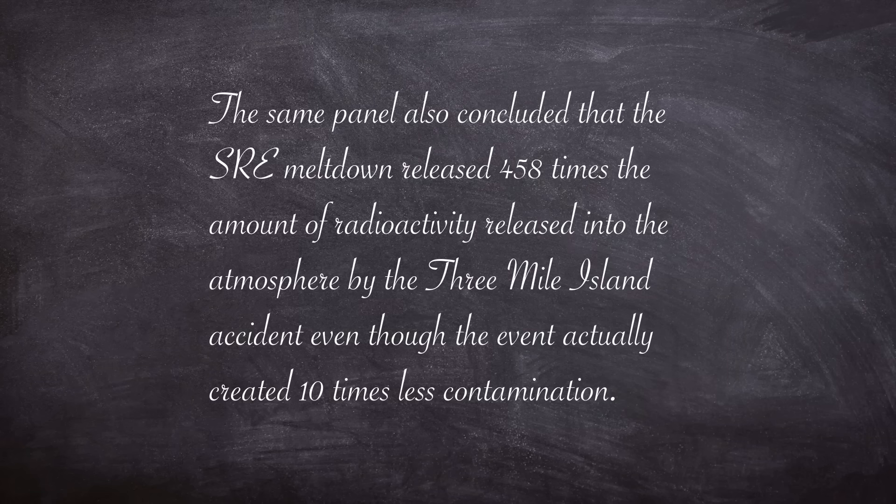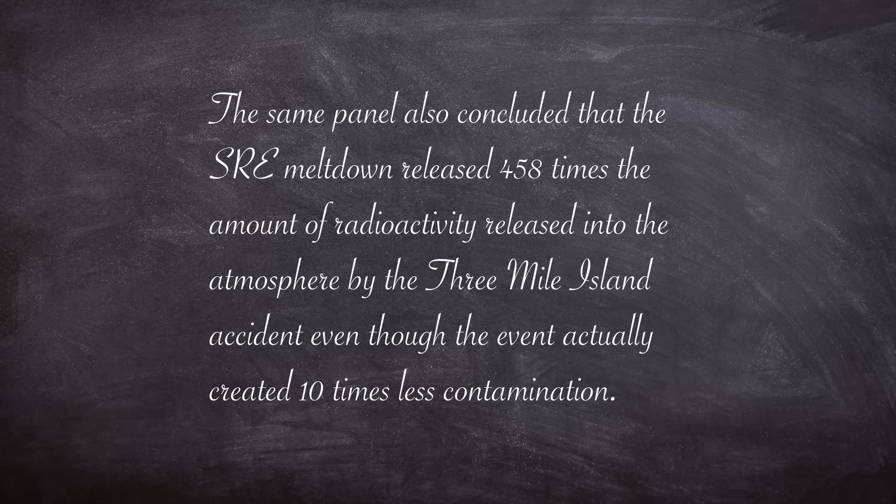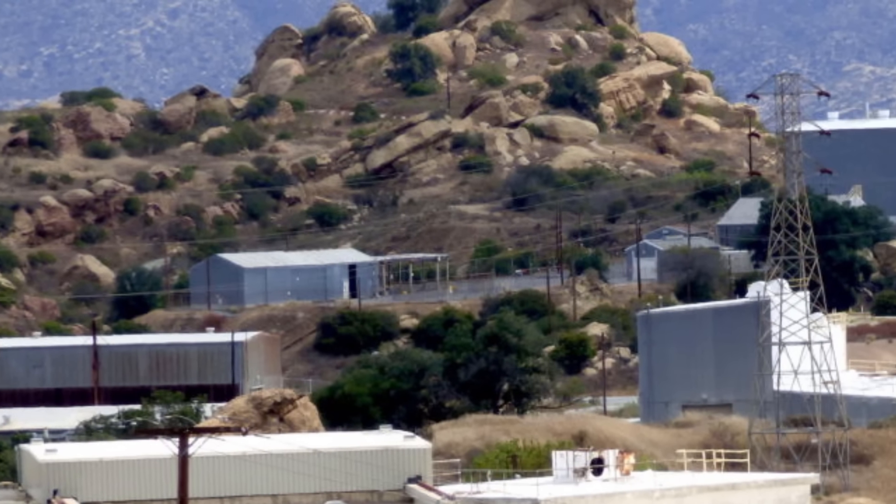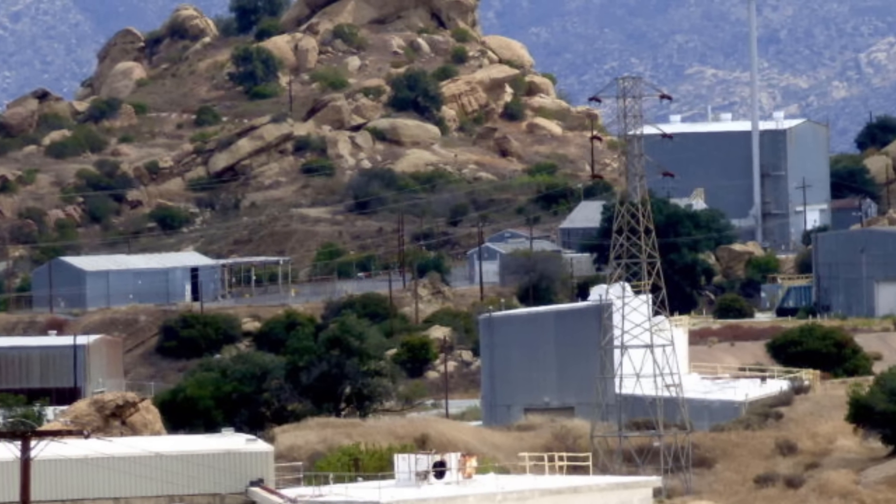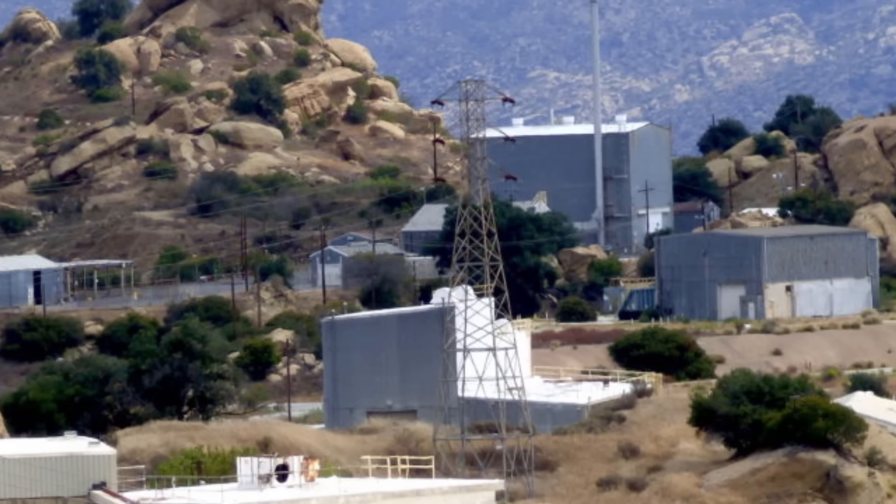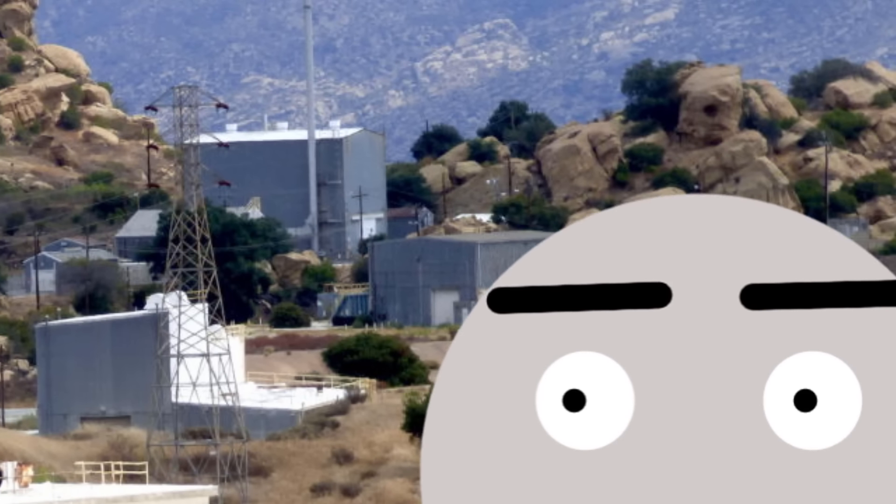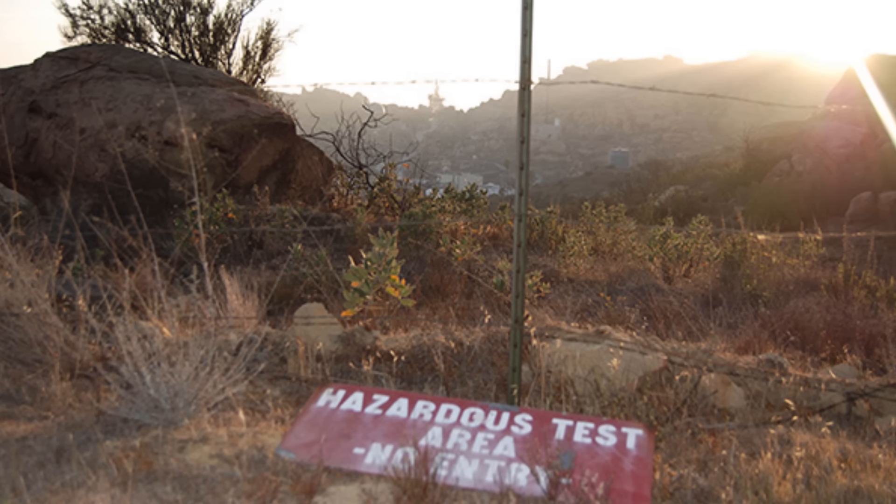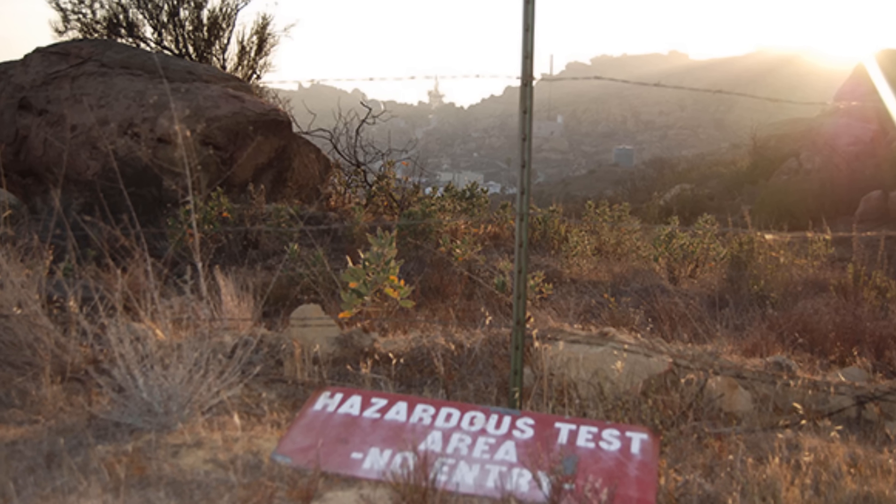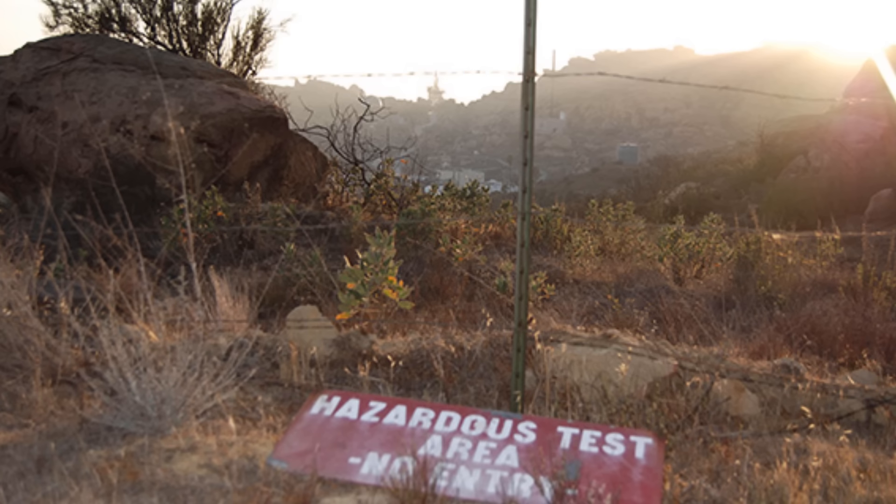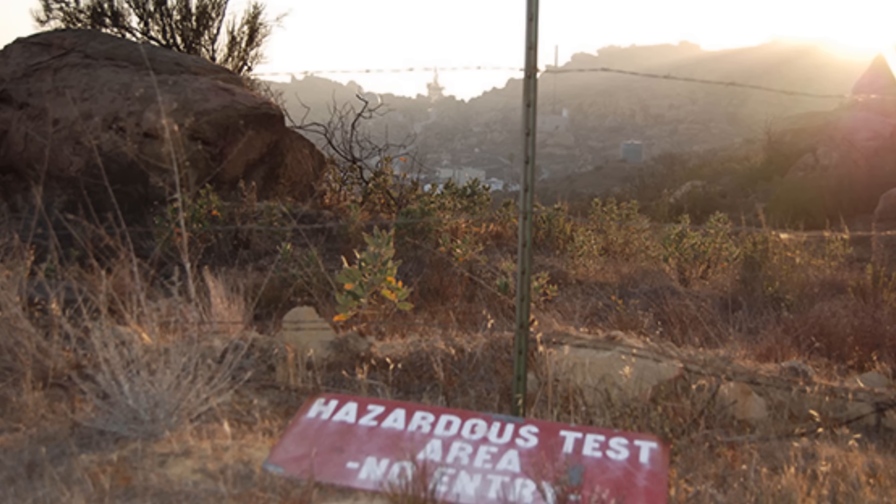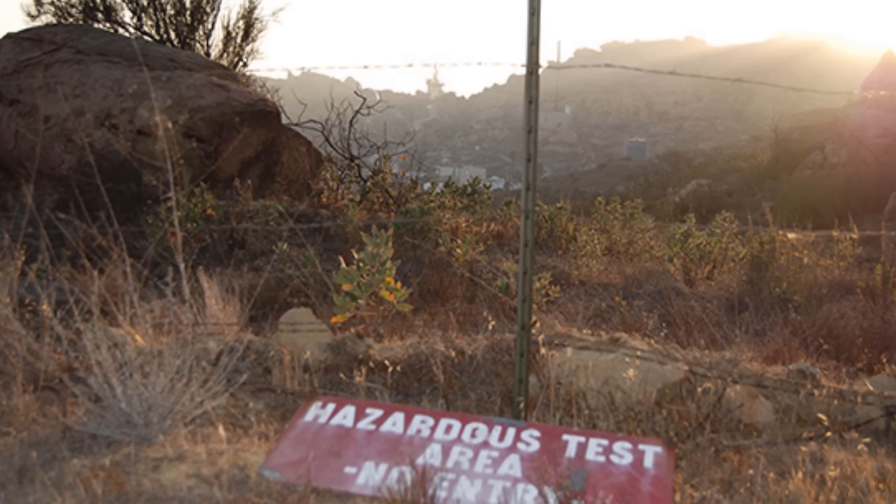The same panel also concluded that the SRE meltdown released 458 times the amount of radioactivity released into the atmosphere by the Three Mile Island accident, even though the event actually created 10 times less contamination. This was due to lack of confinement buildings at the site and other experimental reactors bearing in mind that the TMI accident was fairly well contained within its confinement building. However, this is widely disputed in several conflicting reports so you may have to believe what you want on this one. The clean up efforts at Santa Susana as a whole still continue to this day as all sorts of nasty materials have to be safely removed and disposed of but this will most likely be a subject of a future video as the SRE incident is only scratching the surface.